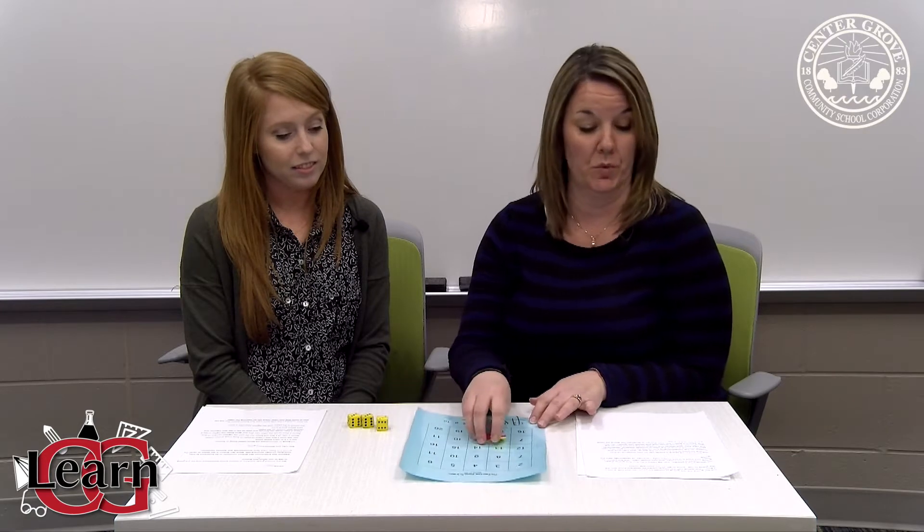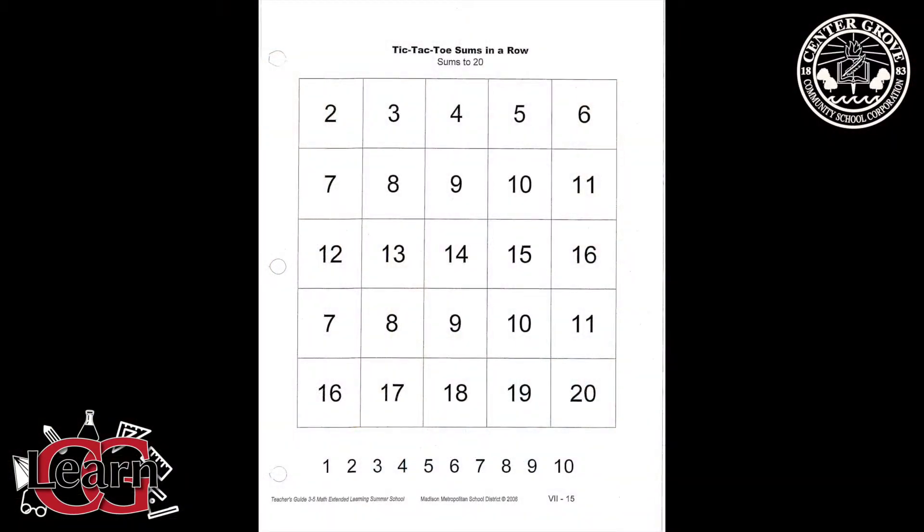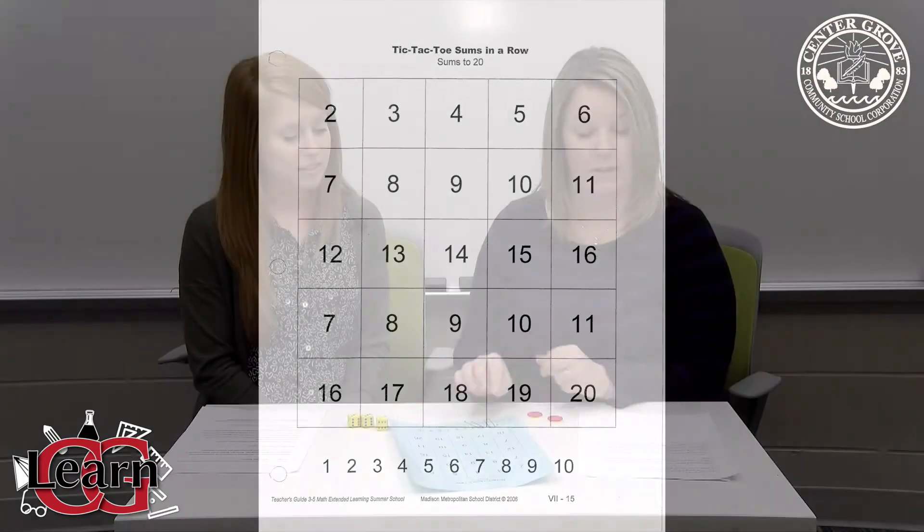So we're going to model a game for you first called Tic-Tac-Toe Sums in a Row. This game can be differentiated for different sums, but we are going to use sums to 20 as our example for today. This game is created for two players. You will need a tic-tac-toe game sheet, game markers in two different colors, and two paper clips. The first person to make four sums in a row horizontally, vertically, or diagonally wins the game.